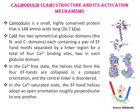In the calcium ion-free state, the helices that form the four EF-hands are collapsed in a compact orientation and the central linker is disordered. In the calcium ion-saturated state, the EF-hand helices adopt an open orientation, roughly perpendicular to one another. The small blue dot-like structures — two in the N-domain and two in the C-domain — are calcium ions.